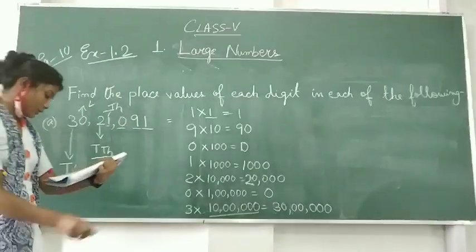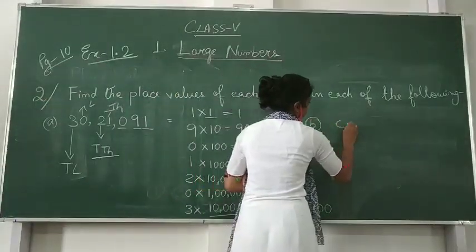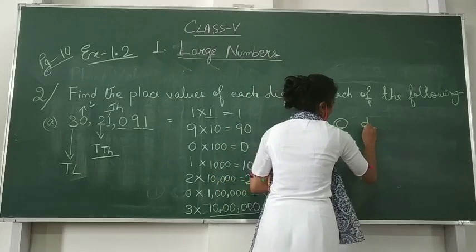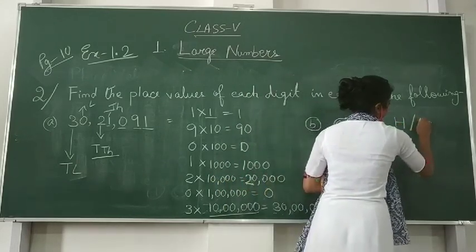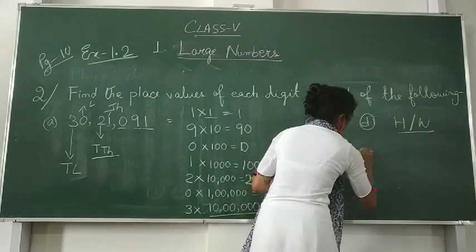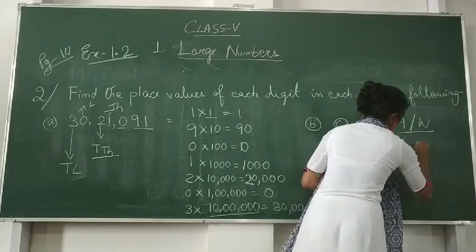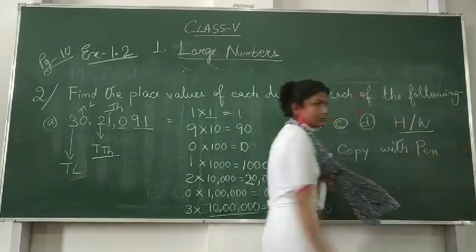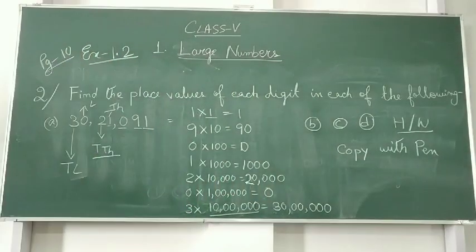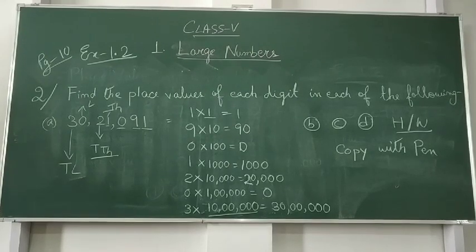You can see from here and write it down in your copy. You will do questions A, B, C, D in your copy by looking from here. Write with a pen and neat, clean handwriting. Am I clear? Okay, students. Thank you.